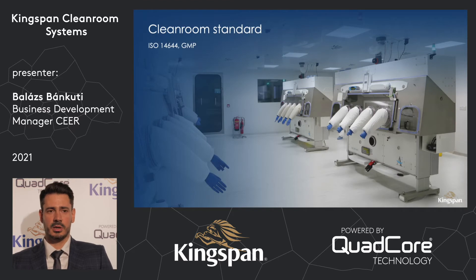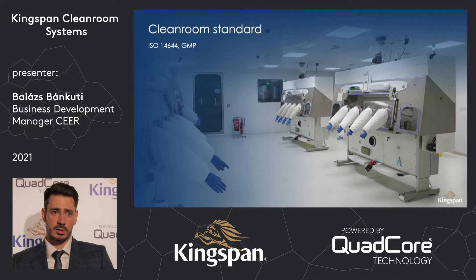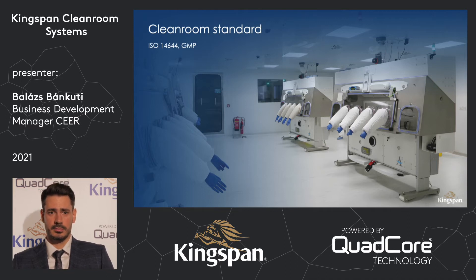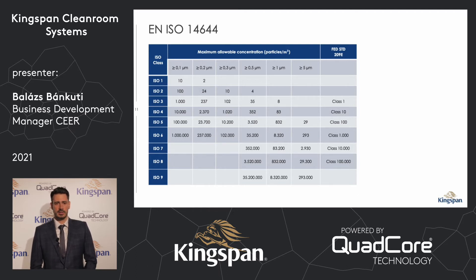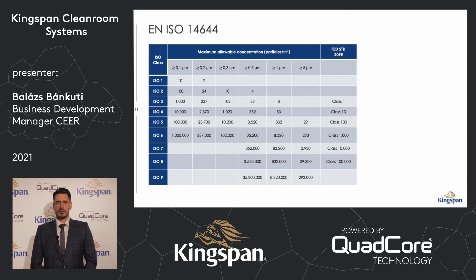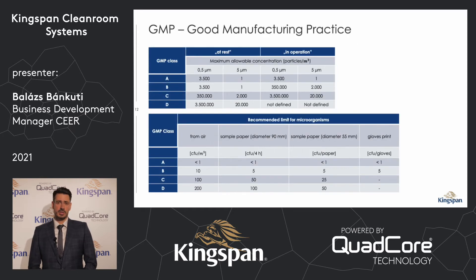In the next slides we will speak about the cleanroom standards. There are two common standards used in Europe: the ISO 14644 and the GMP. The ISO standard classifies cleanrooms into nine classes, from ISO 1 to ISO 9. The norm classifies cleanrooms according to the particle numbers in one cubic meter of air. Let's compare this with the GMP standard.